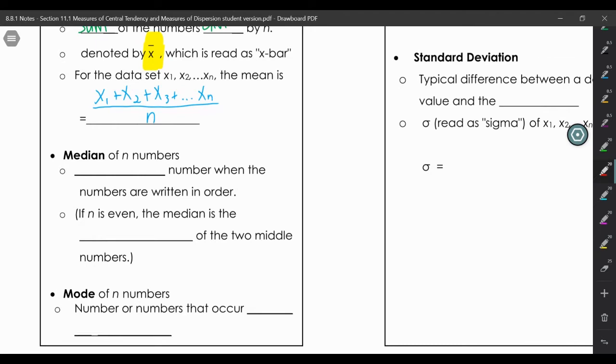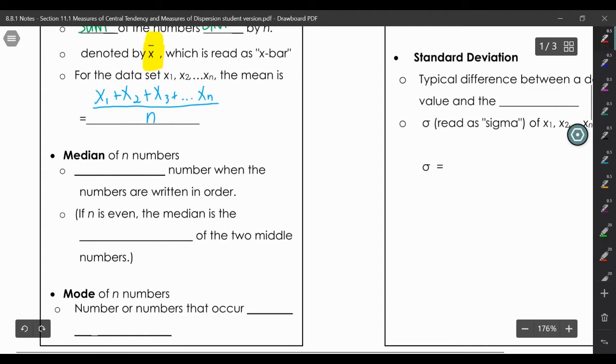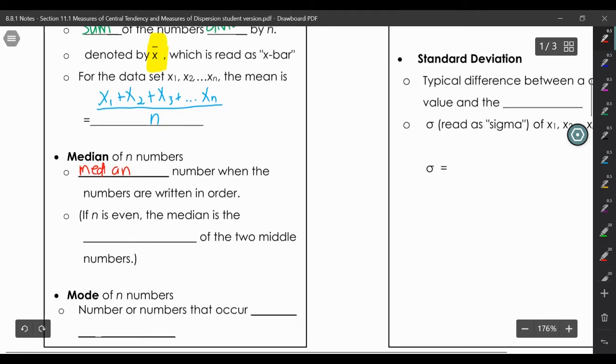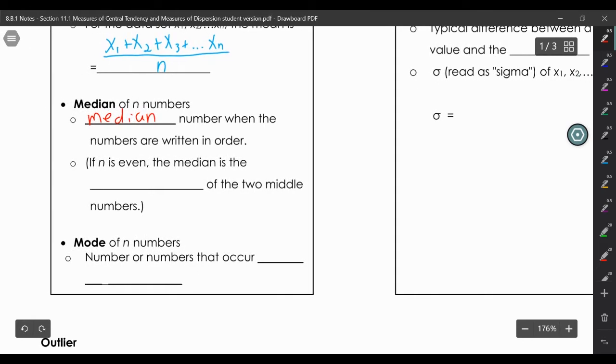The median is the middle number when the numbers are written in order. If you think about driving your car, there's that median in some of the busier roads, that's right in the middle. It's important that the numbers are in order. If it is even, so like if we have a set of four numbers, it's hard to find that middle because there's two middles. You would average the two middle numbers.